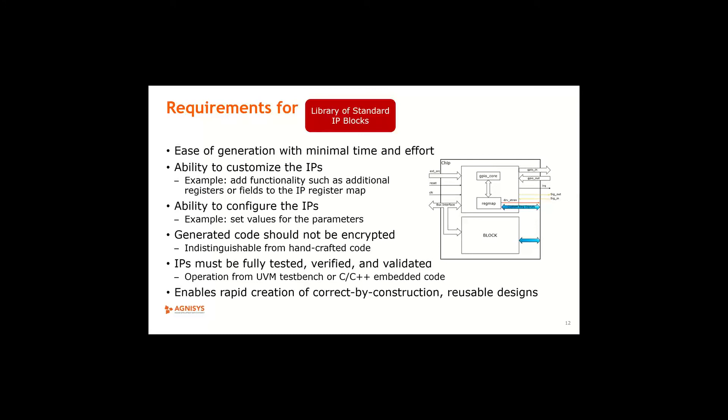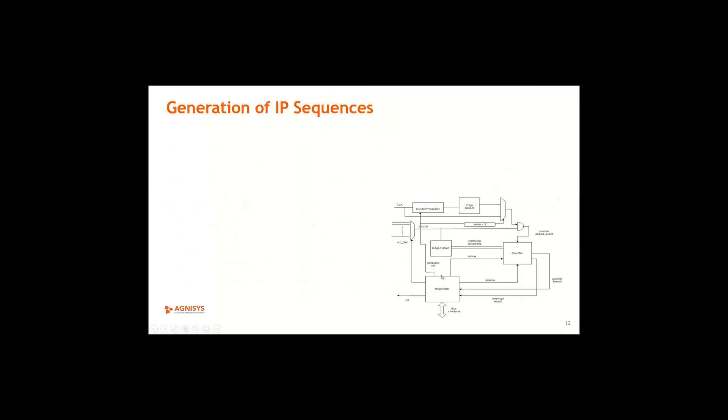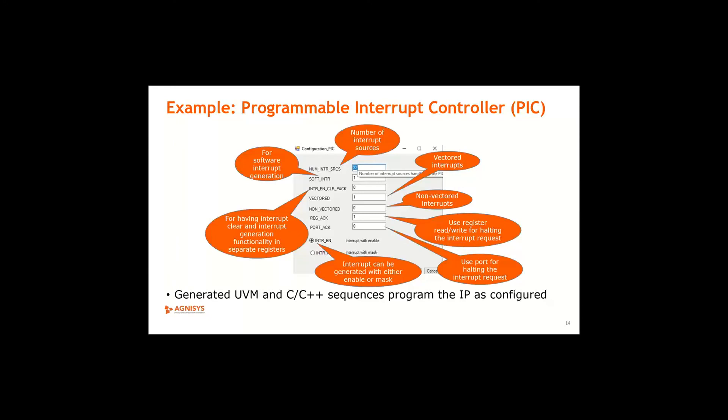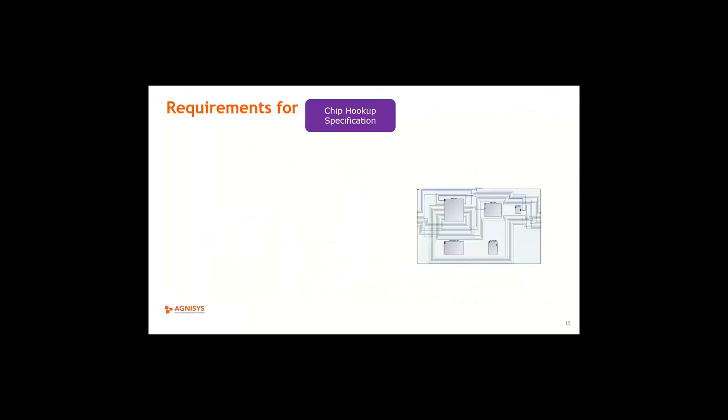So this basically helps you create correct by construction reusable design because the IPs are already pre verified. So here is an example of like the programming sequence for like a timer, for example, can be configured in the multiple ways by selecting generation parameters and runtime parameters. For example, you could customize it by adding additional registers and fields to it. So this is just showing how you can create these IPs and the associated API with the IPs.